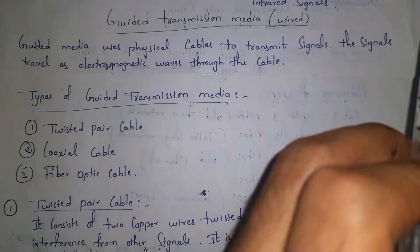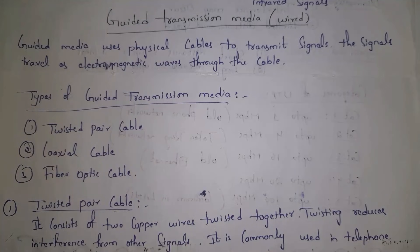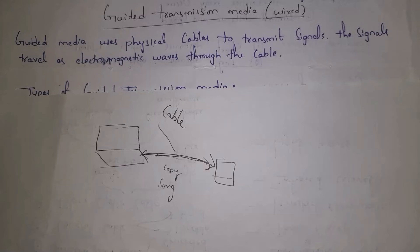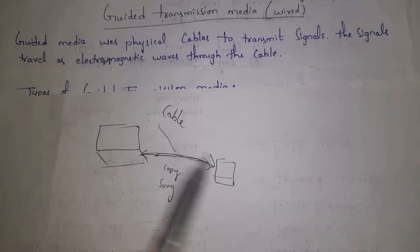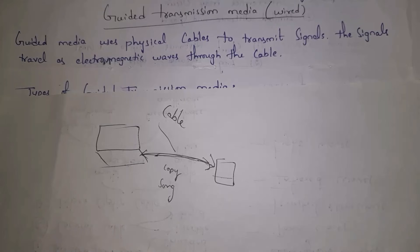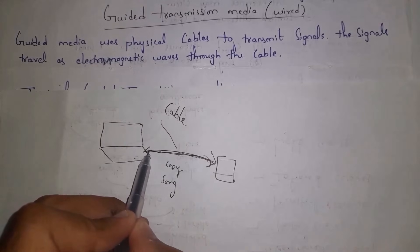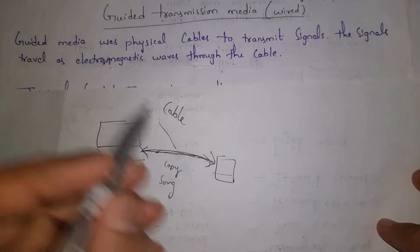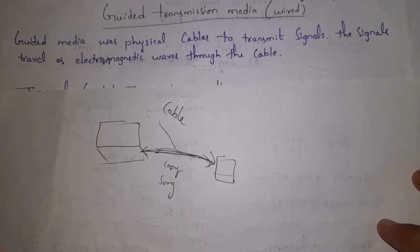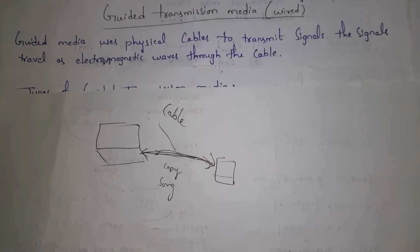The signal in guided media travels as electromagnetic waves through the cable. For example, if I want to copy songs from my laptop to mobile, I connect them using a cable wire — that is guided transmission media. Whenever data is being copied, the data travels in the form of electromagnetic waves through the cable.